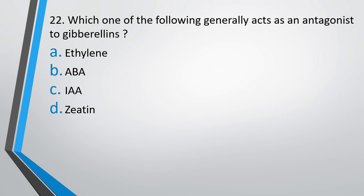Question number 22. Which one of the following generally acts as antagonist to gibberellin? Antagonistic action to gibberellin: ethylene, ABA, IAA, or zeatin? Correct answer is Option B - ABA, that is abscisic acid.